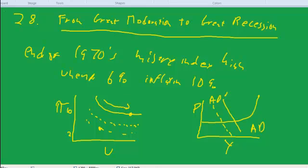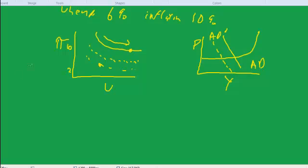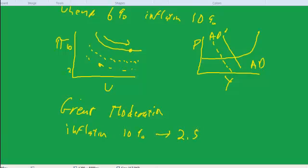And then the economy moved on its own back to lower unemployment. So by reducing aggregate demand, they lowered the inflation rate, and eventually the natural forces in the economy brought the unemployment rate back down. And that was what we call the great moderation, because inflation went from 10% down to about 2.5%.